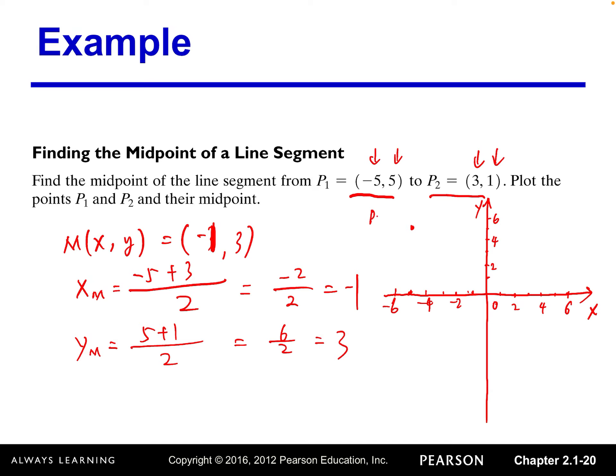That's P1, negative 5, positive 5. P2, 3, 1. Go right 3, up 1. So that's P2, 3, 1.